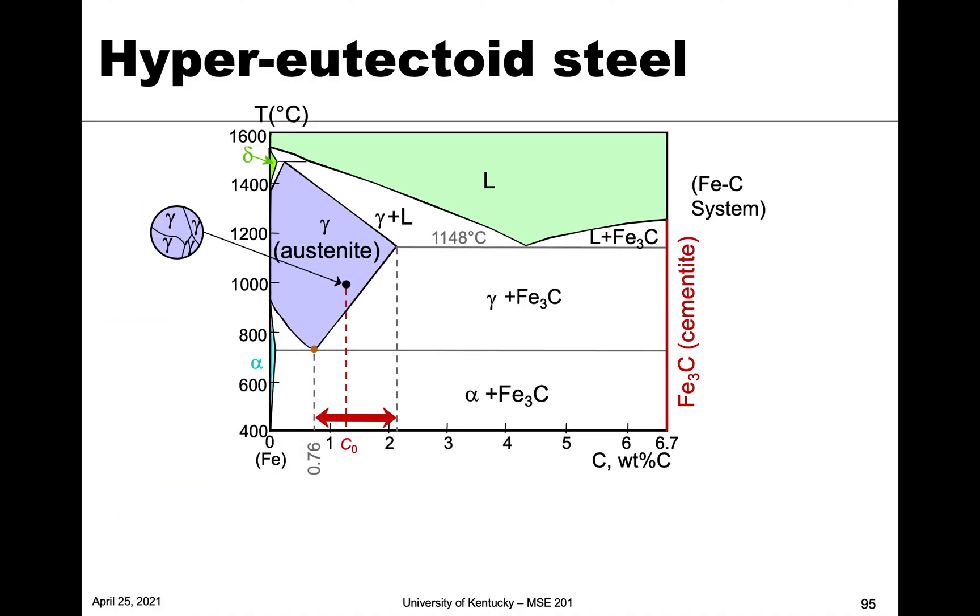So now let's look at hyper eutectoid steels. So these are compositions above 0.76, but below this 2.1 approximately temperature. So we have a composition here in red, and this would be a hyper eutectoid steel.